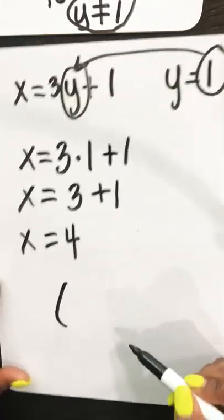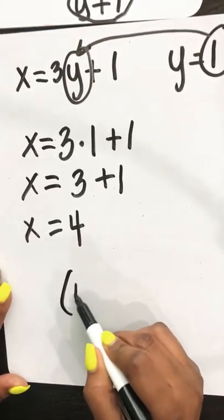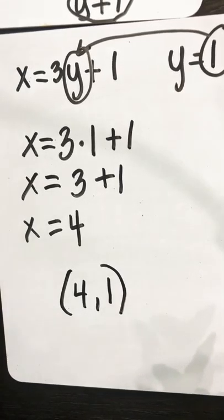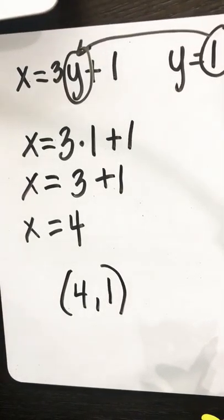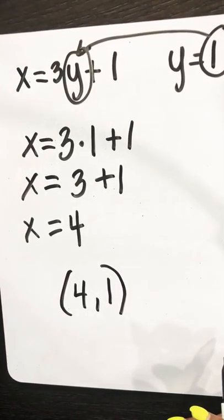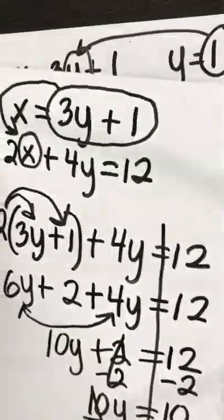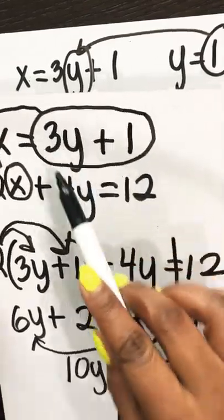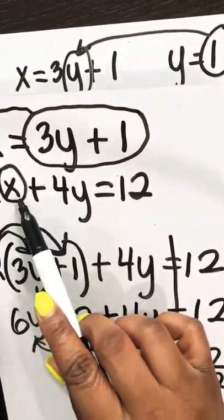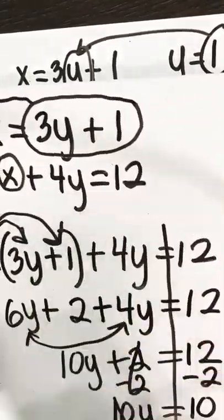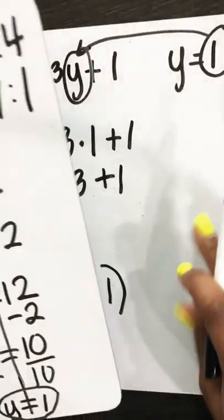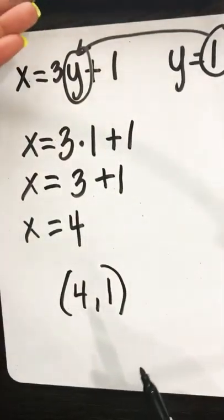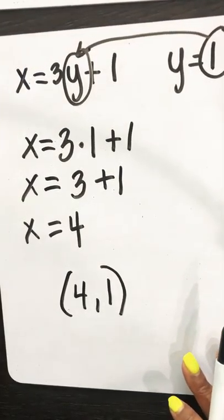We write our answers as the solution (4, 1). As a recap with substitution: start with your original equation, then substitute to eliminate one variable. Think about what you can substitute for x to help solve for y, and once you find y, you can find x. Thanks for watching.